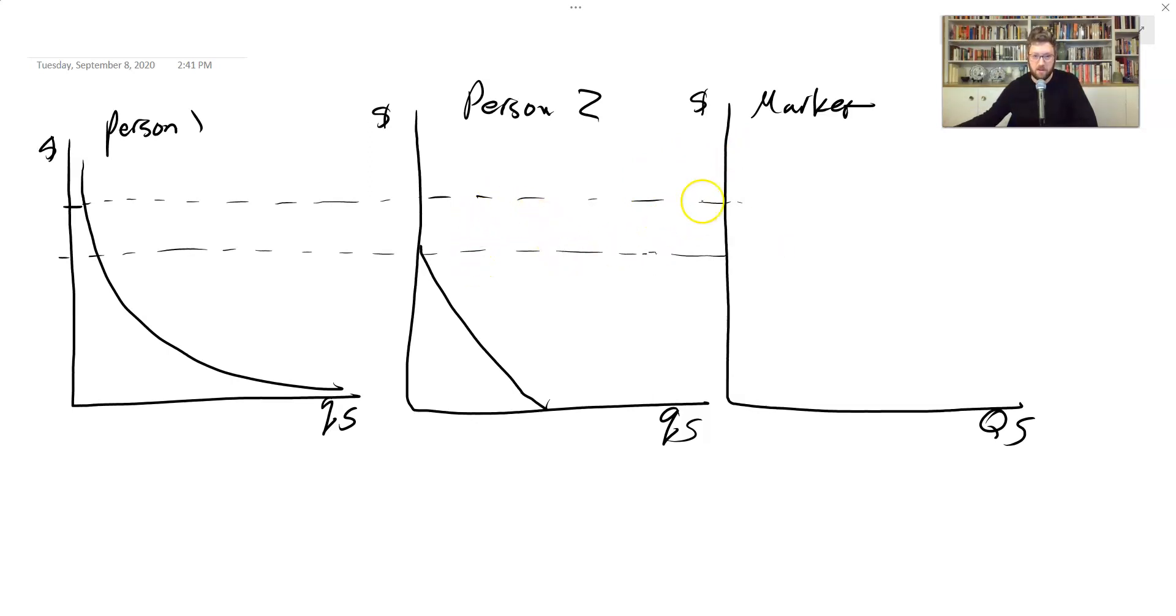Once we get down to this price, we have to add in the demand from person two. So person one wants this quantity, person two wants this quantity, and we have to add those together to get the demand from the two of them. So maybe it's out here. And then as we go down here, we've got this level of demand from the first person, this level from the second person.